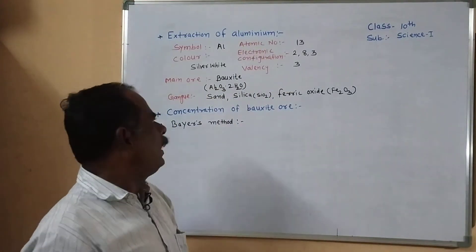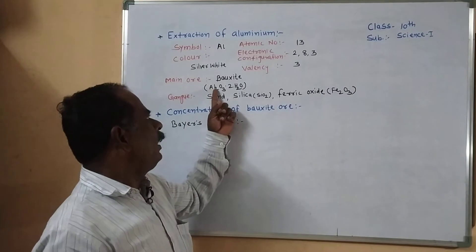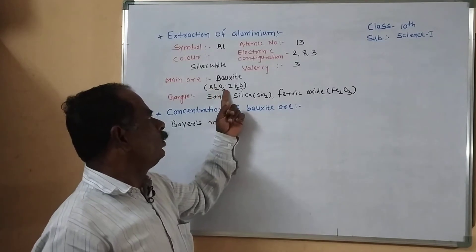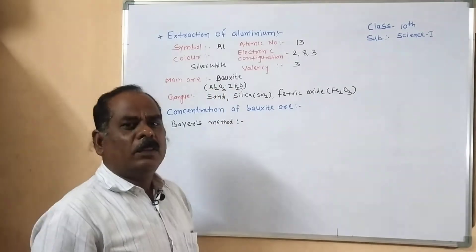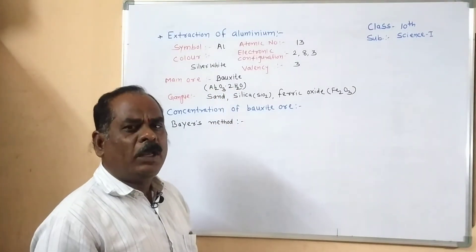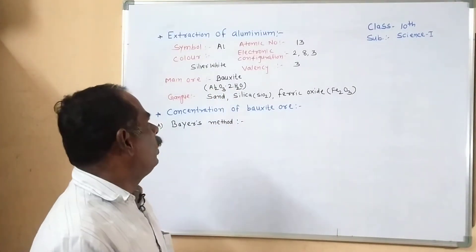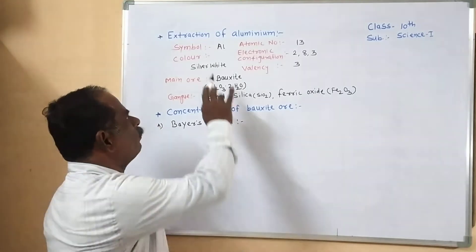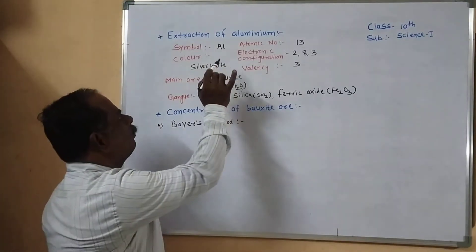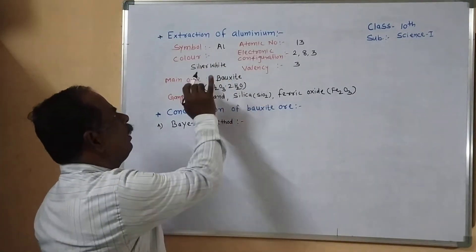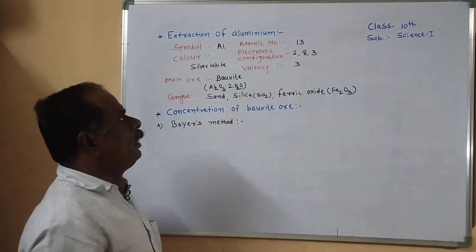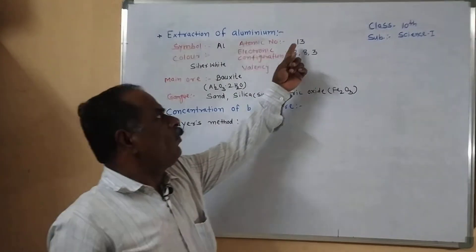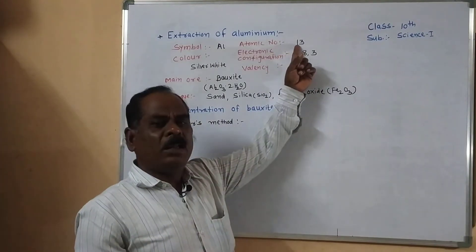Therefore aluminum mainly occurs in the form of bauxite ore. The formula of bauxite is Al₂O₃·2H₂O. The symbol of aluminum is Al and its color is silvery white.